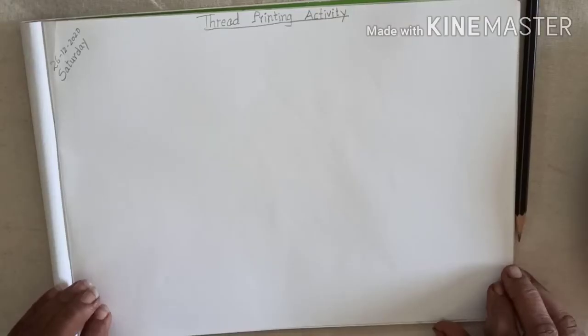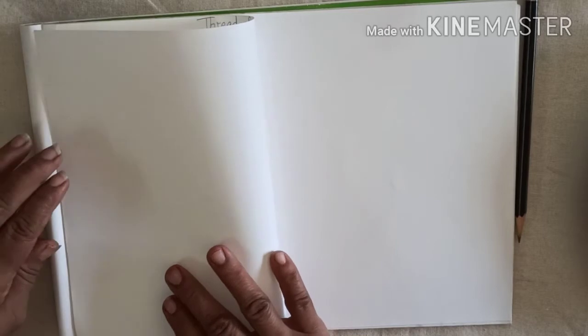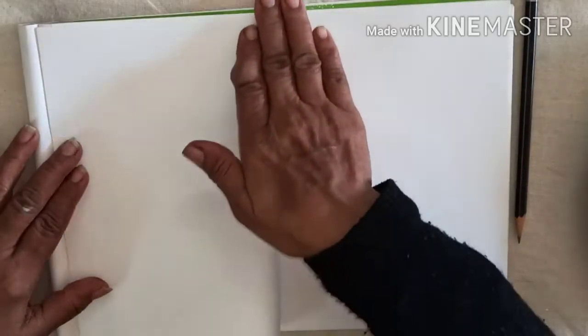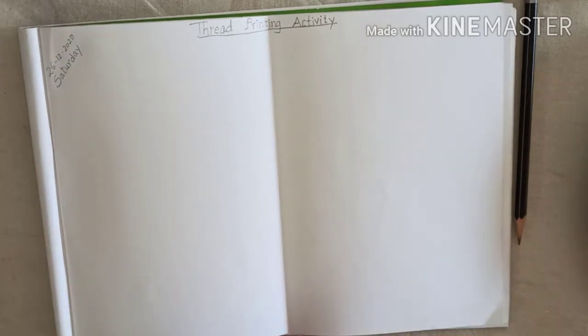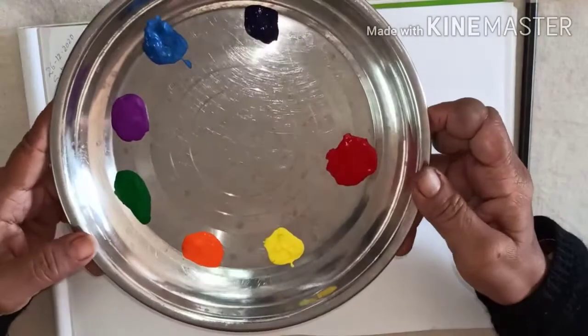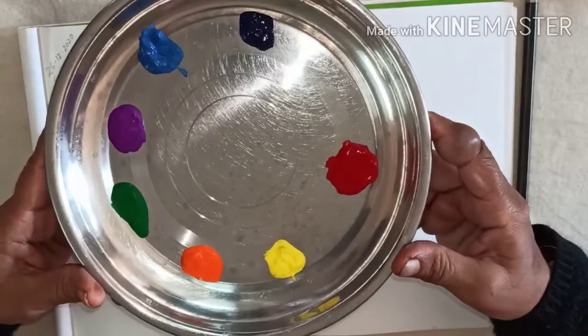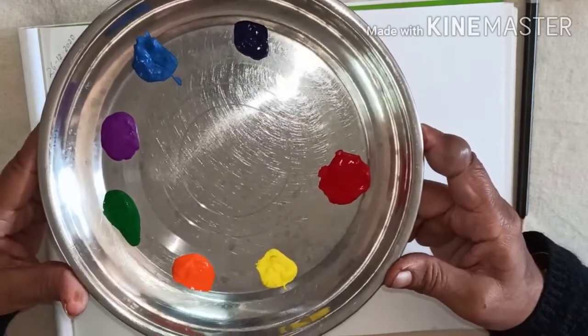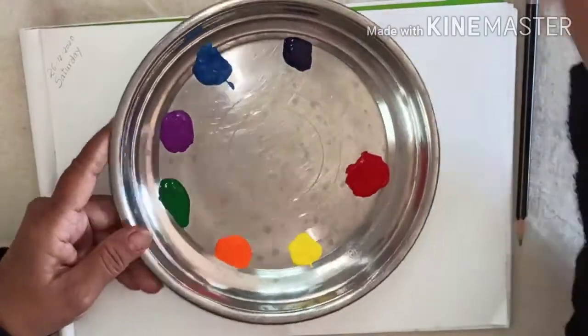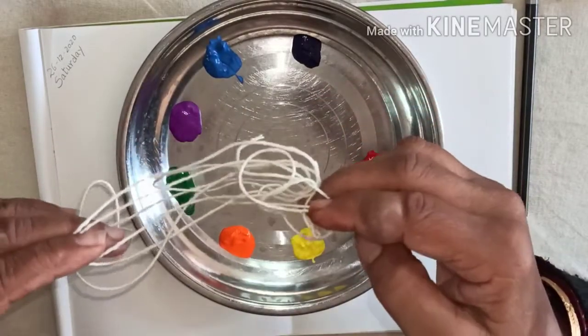Okay? To do this activity, the activity करने से पहले आपको ये पेज को half fold करना है. इस तरह से. Half fold करना है. देख लिया? कैसे fold किया मैंने? उसके बाद उसको open करना है. Okay? Now you have to take different colors. अलग-अलग water colors लेने है. Okay? आपको जो भी colors पसंद है, वो आप ले सकते हैं. मैंने ये colors लिये हैं. और thread. उसके लिए क्या चाहिए? Thread.